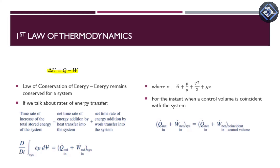This equation states that the internal energy, given as delta U, where delta U is the internal energy, Q is the heat transfer rate into the system, and W is the work done by the system. In short, the first law of thermodynamics states that energy cannot be created or destroyed — it is a statement about the conservation of energy.